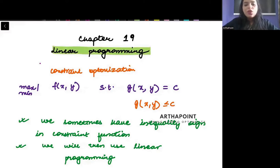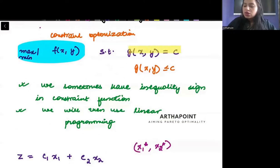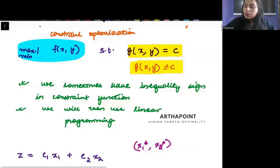We have already talked about constrained optimization in the last chapter. What is constrained optimization? Constrained optimization is when you want to maximize or minimize your objective function, but it is subject to some constraint. There is some constraint in your hand. So for example, when you want to maximize your utility subject to your budget constraint,